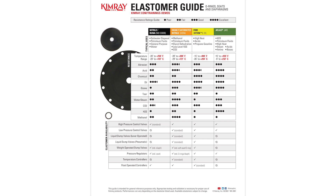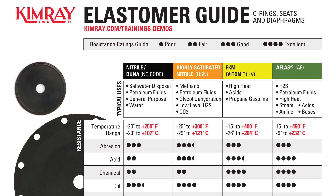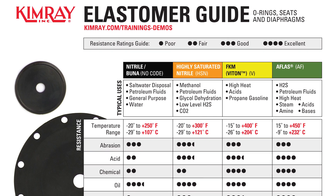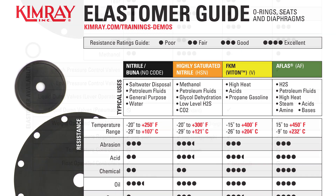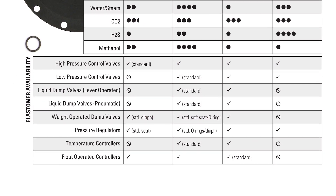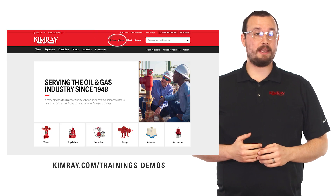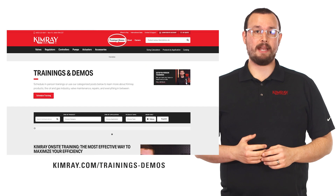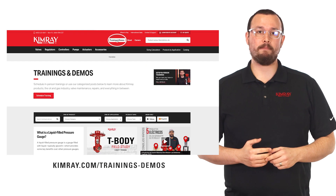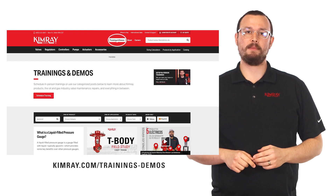In addition to this video, we put together a reference guide for our primary elastomer options with wear resistance, properties, and product availability. You can download this from our training and demos page at Kimray.com or follow the link below. Let's get started.